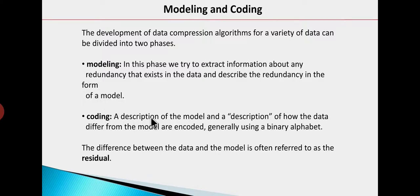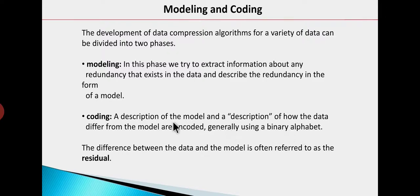In the coding phase, a description of the model and a description of how the data differ from the model are encoded generally using a binary alphabet. So in coding, we have to assign code words — code words using binary alphabet, meaning 0 and 1 — assigned to represent the model and the actual data which we have to compress.